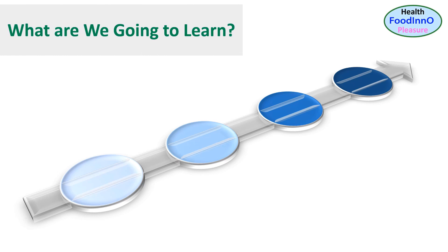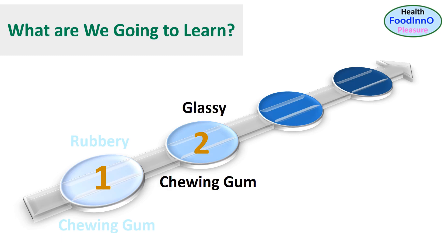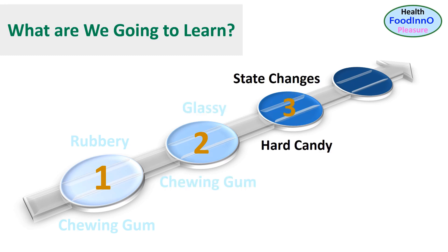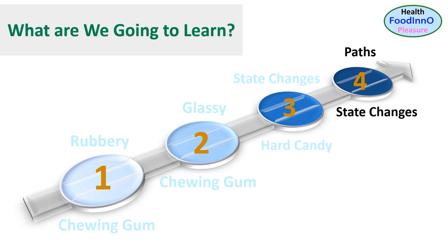What are we going to learn? First, we could try to understand why chewing gum is in the rubbery state. Second, how rubbery chewing gum could be transformed into a glassy state. Third, we can observe the state changes of a hot candy. Fourth, how we could use temperature and moisture control to achieve different states of a food.